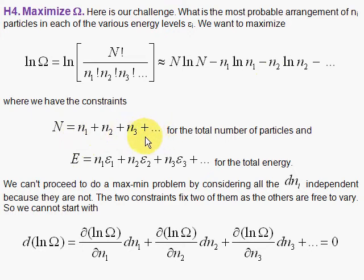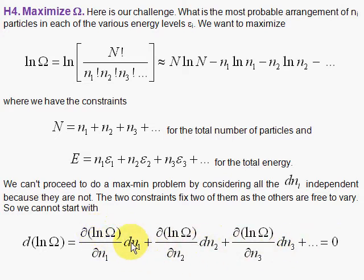The total number of particles in each of the various energy levels equals capital N, which is constant — that's one constraint. And the total energy is also a constraint. We proceed with doing our max problem by taking the differential of log of omega set equal to 0, and all these partials with the variables.